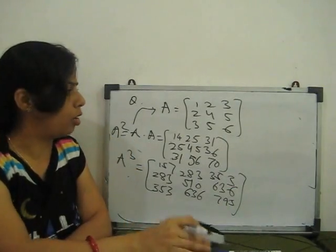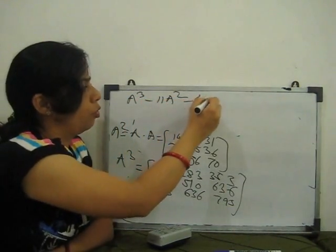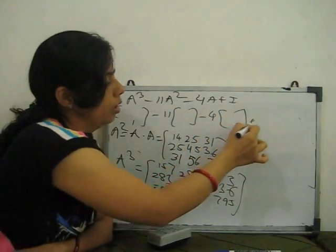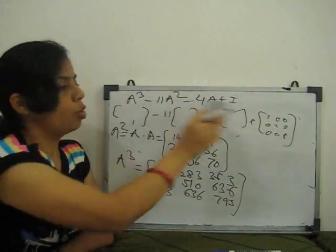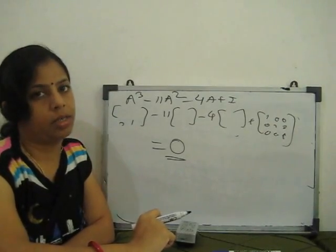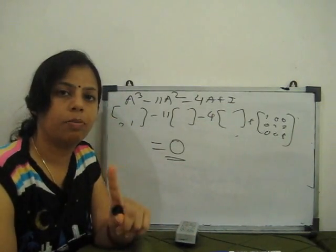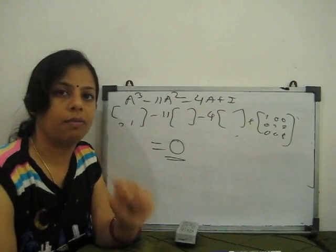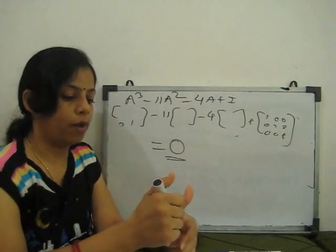Now substitute A³, A², A, and I into A³ minus 11A² minus 4A + I. When you apply all the element-wise operations you will get 0, confirming the right-hand side equals the left-hand side. This is the verification of the Cayley-Hamilton theorem. The main thing to remember is to carefully compute A² and A³ — make sure which element multiplies which — and your answer will definitely come out to zero.